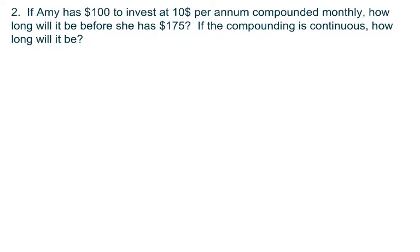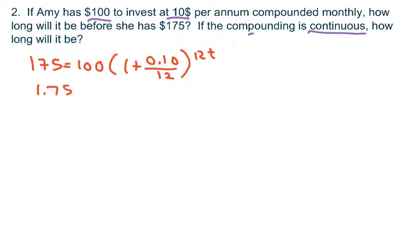Okay. The next one, we have Amy investing $100 at 10% compounded monthly. And we want to see how long it takes before she has 175 and then the other way we're going to do continuous compounding. So basically we're going to do the same thing. We have 175 equals 100 times 1 plus 0.10 over 12 to the 12t. And if you divide both sides by 100, you get 1.75 equals 1.00833 to the 12t.